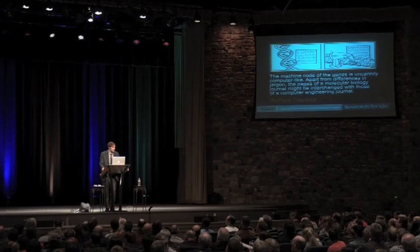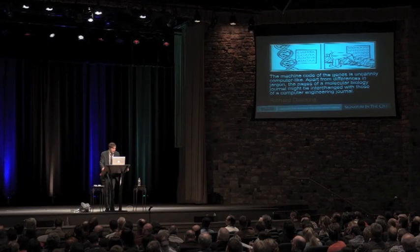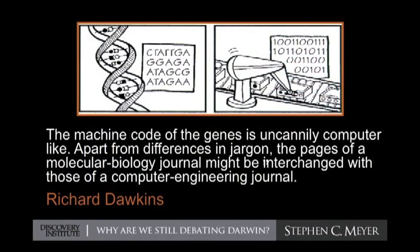This brings us back to the starting point of the lecture: do we have in the simple cell an appearance of design — an appearance of design that has not been explained away by purely unguided, undirected materialistic processes? We do. The most striking appearance of design, among many at the microscopic level, is the presence of this digital code, especially when we understand what it's doing. Richard Dawkins says that the machine code of the genes is uncannily computer-like; apart from differences in jargon, the pages of a molecular biology journal might be interchanged with those of a computer engineering journal. We have digital code. We have replication. All this intricate information processing system.